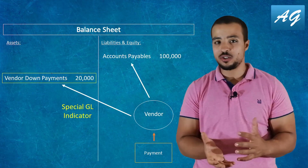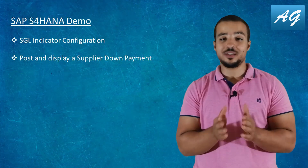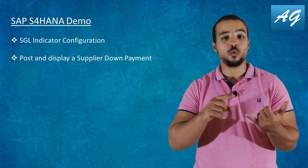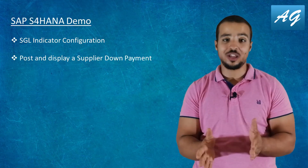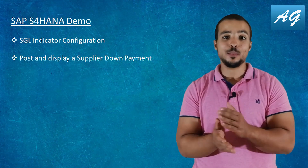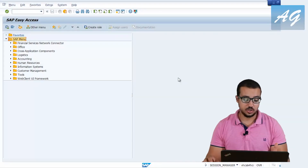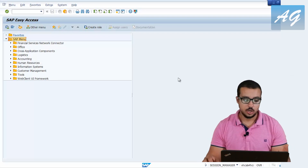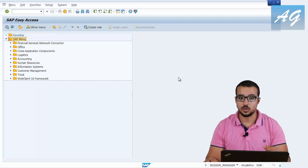If you put any value in the special GL indicator field, you are telling SAP that instead of using the standard accounts payable reconciliation account, we are going to use a different reconciliation account assigned in the configuration. This will get much easier once I show it on the system. I'm going to demonstrate on SAP S4HANA how to configure the special GL indicator, and then post a financial entry so we can see the impact of this indicator. The example I'll demonstrate today is for down payments.